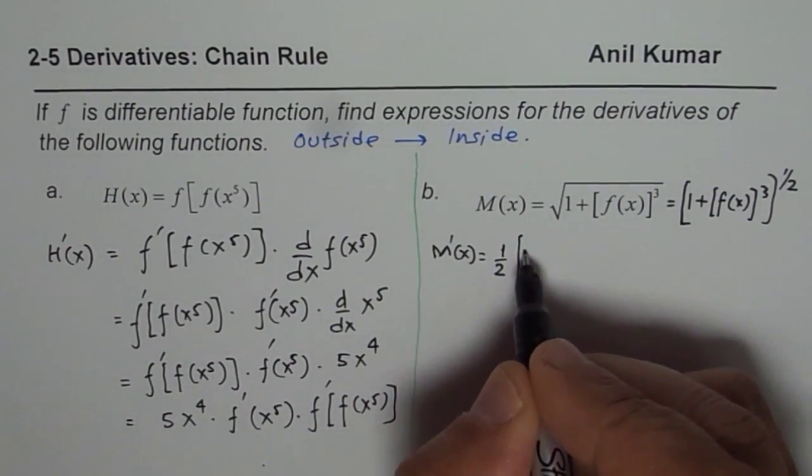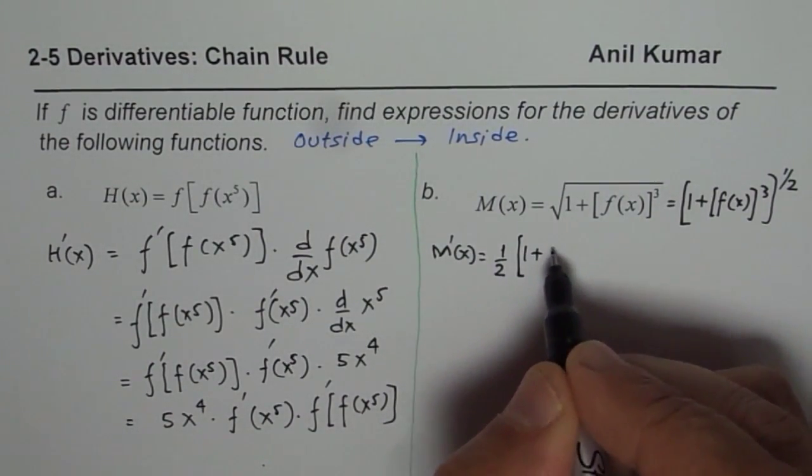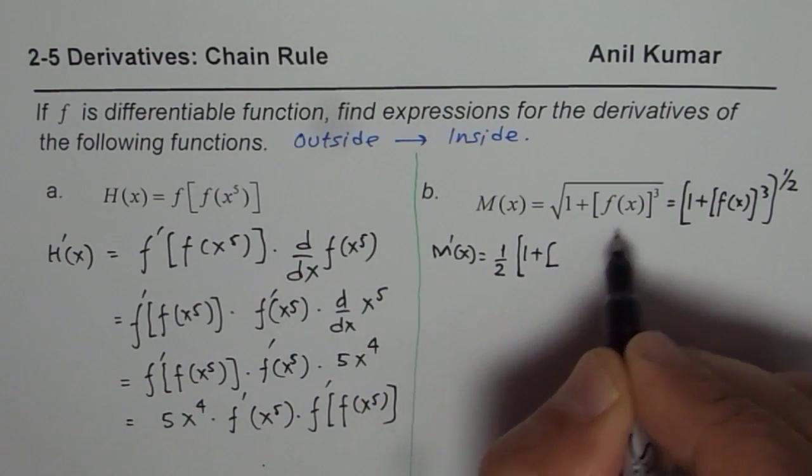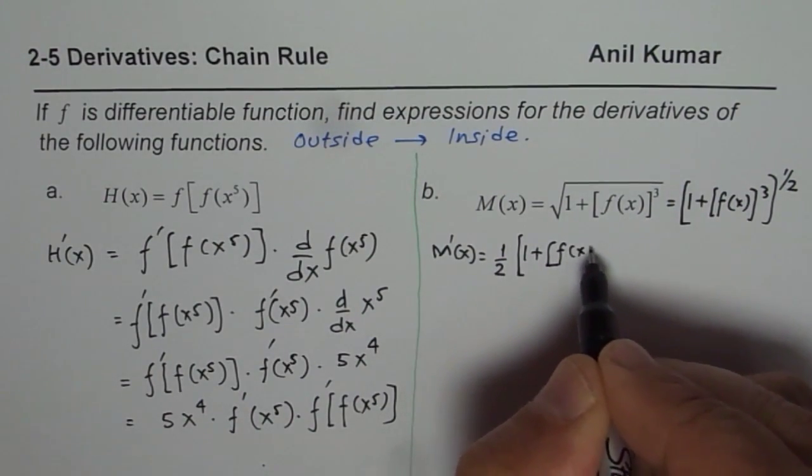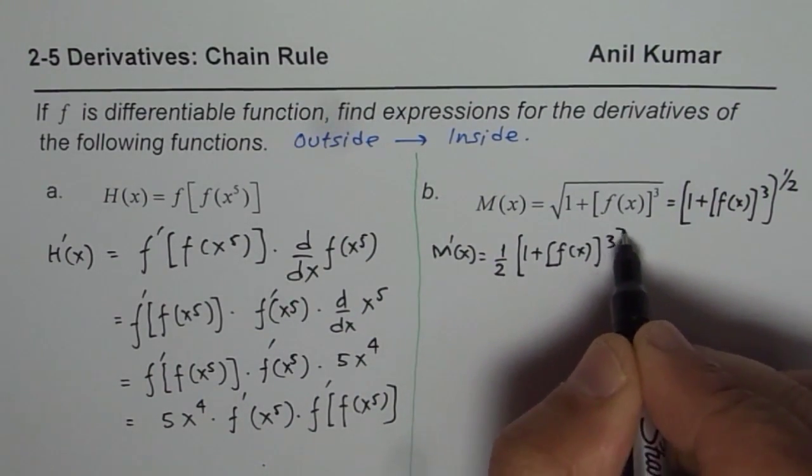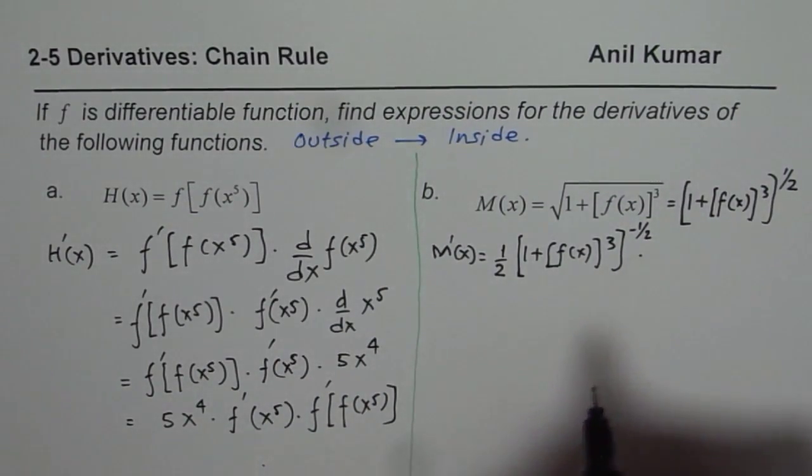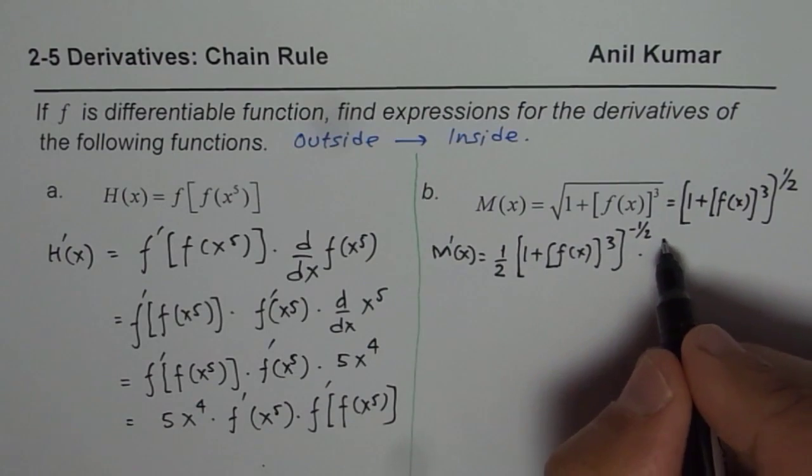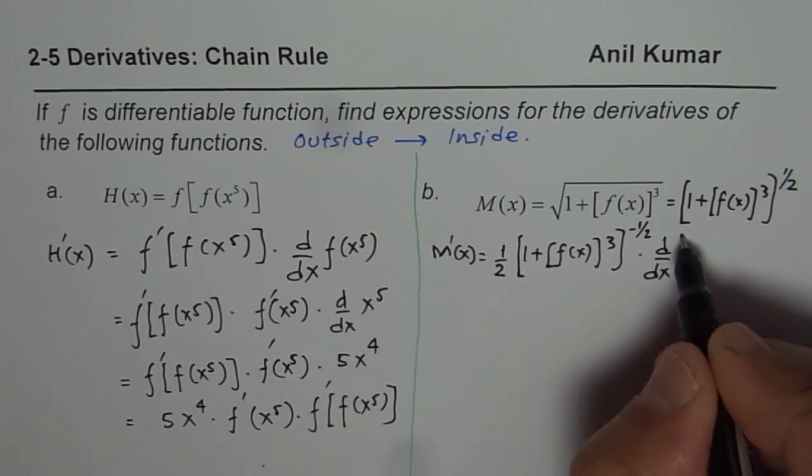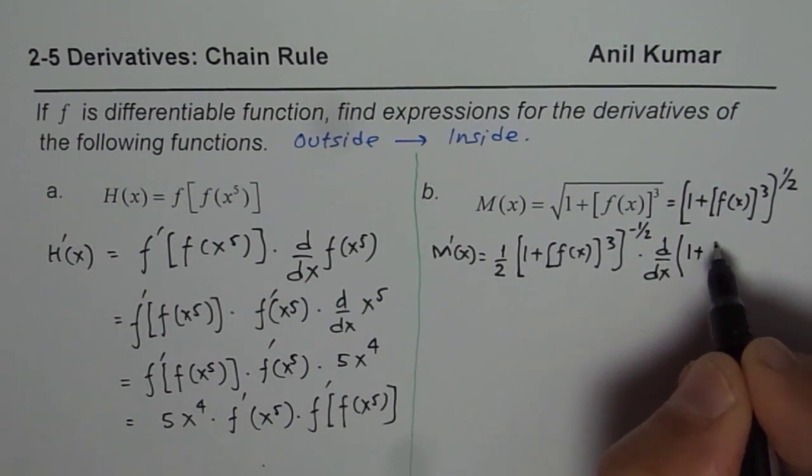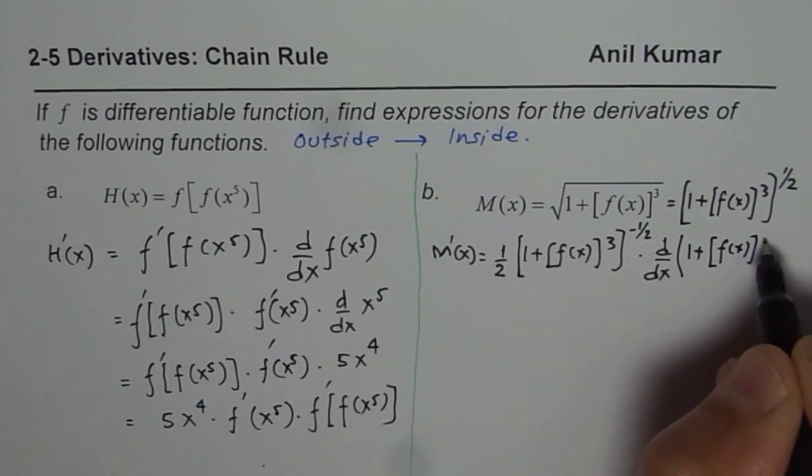So all this is (1 + [f(x)]³)^(-1/2). That is 1/2 minus 1, times the derivative of the inside function. Let me write d/dx of the inside function, which is 1 plus [f(x)]³.